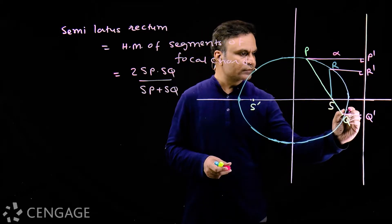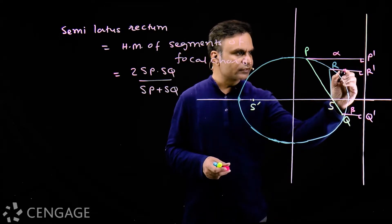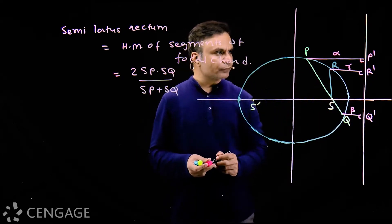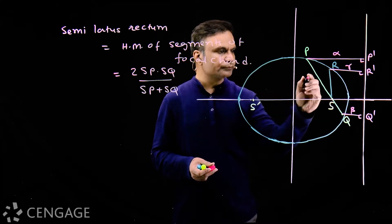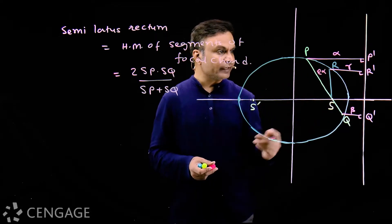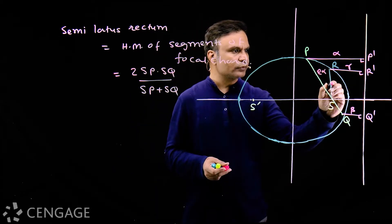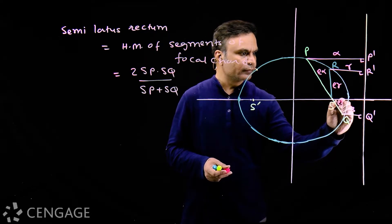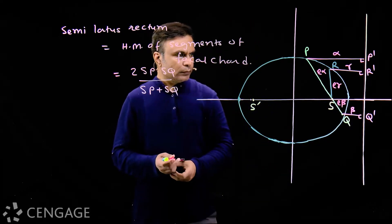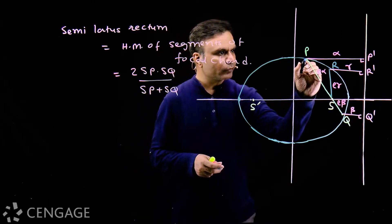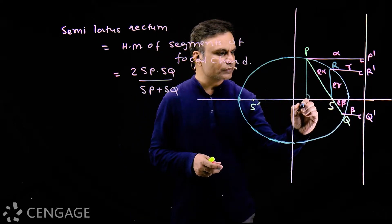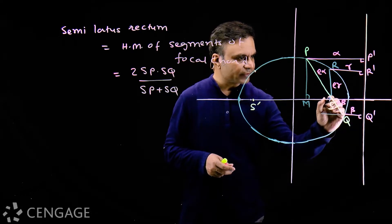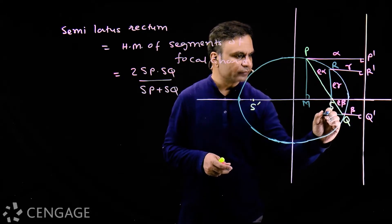Let PP' equal alpha, QQ' equal beta, and RR' equal gamma. Since points P, R, and Q lie on the ellipse, by the definition of the ellipse: distance SP equals e·alpha, distance SR equals e·gamma, and distance SQ equals e·beta, where e is the eccentricity. Now from point P, draw a perpendicular to the major axis — call this point M. Also extend QQ' and draw a perpendicular from focus S to that line — call this point N.